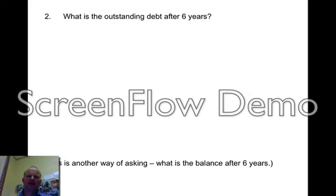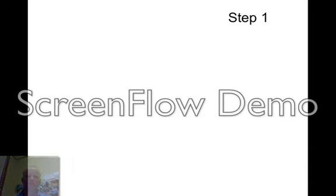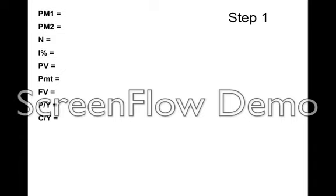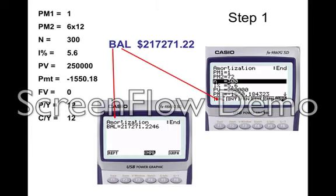So how do we work out the outstanding debt? We use the AMORT function, and there are two steps to it. Step number one: put in what you know — PM1, PM2, N, I, PV, payment, future value — those are all taken from the question before, so the calculator remembers them. Your payment one is the first payment, and payment two will be 6 times 12, because you're looking at the sixth year and there are twelve payments per year. Put this into the calculator, hit Balance which is F1, and you get an answer of $217,271.22. That is what you owe after six years.